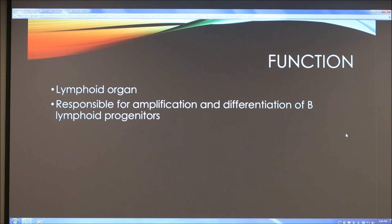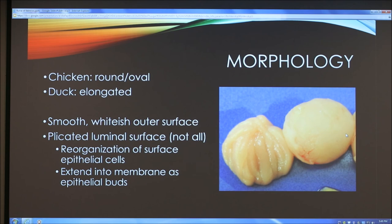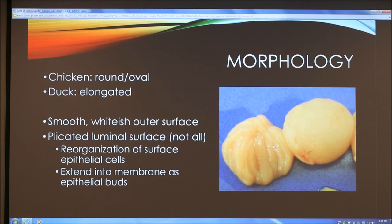Now let's discuss the more detailed physiology of this uniquely avian feature. Let's begin with the morphology, or shape and structure, of the bursa of Fabricius. In chickens, the bursa has a round or oval shape, but in other birds such as ducks it can be elongated. As seen in this image, the bursa has a smooth, whitish outer surface. In most species, the inner surface is plicated, meaning it has folds. These plicae cause a reorganization of surface epithelial cells, causing them to extend into the membrane of the bursa as epithelial buds — the cells making up the outer layer get pushed by the folds and pushed into the membrane to form buds.